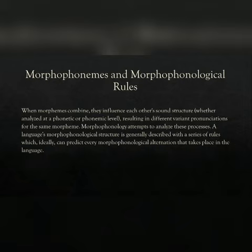In morphophonology, the rules state that when morphemes combine, they influence each other's sound structures, whether analyzed at a phonetic or phonemic level, resulting in different variant pronunciations for the same morphemes. Morphophonology attempts to analyze this process.